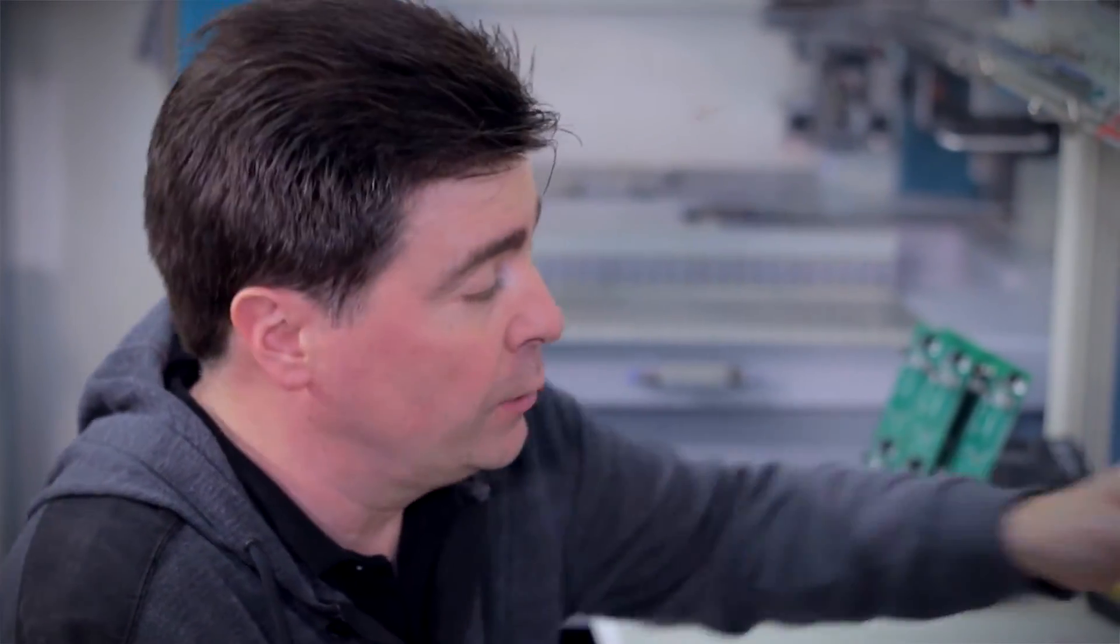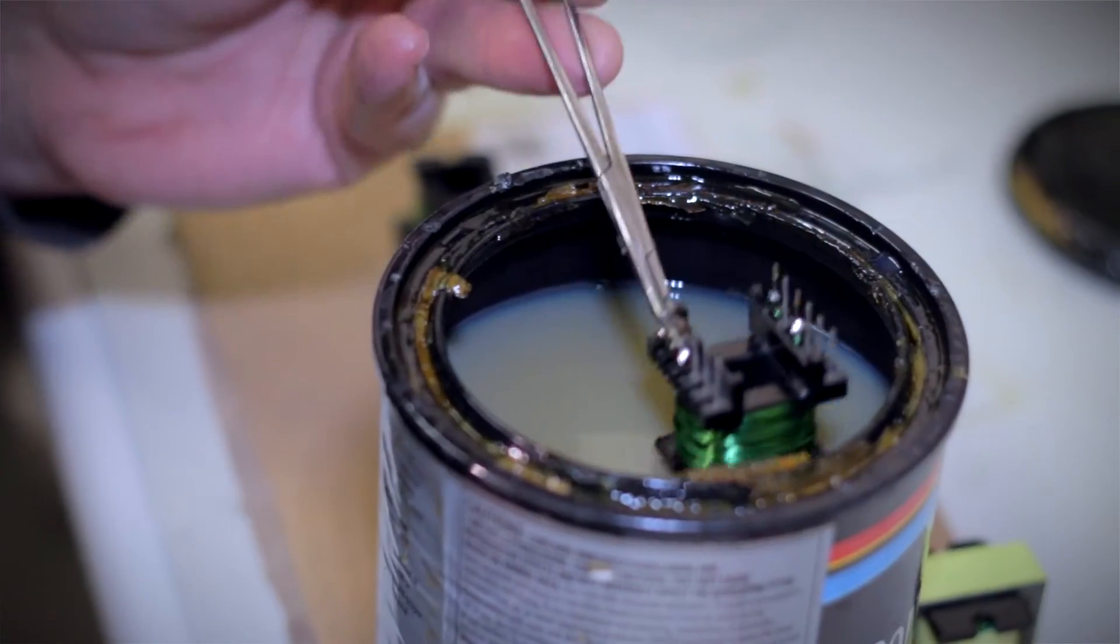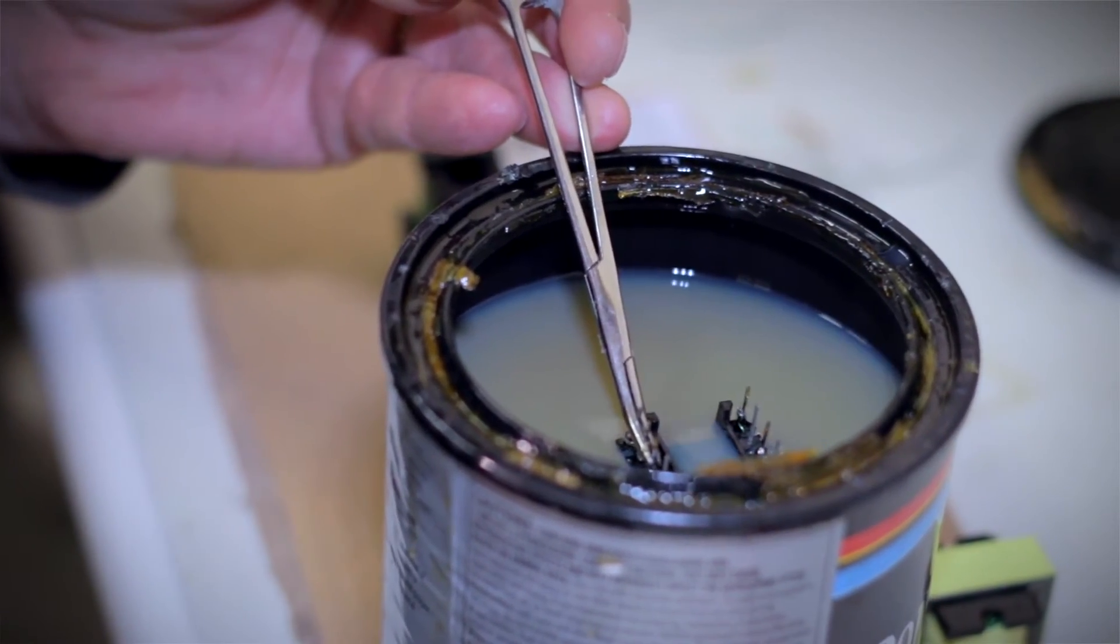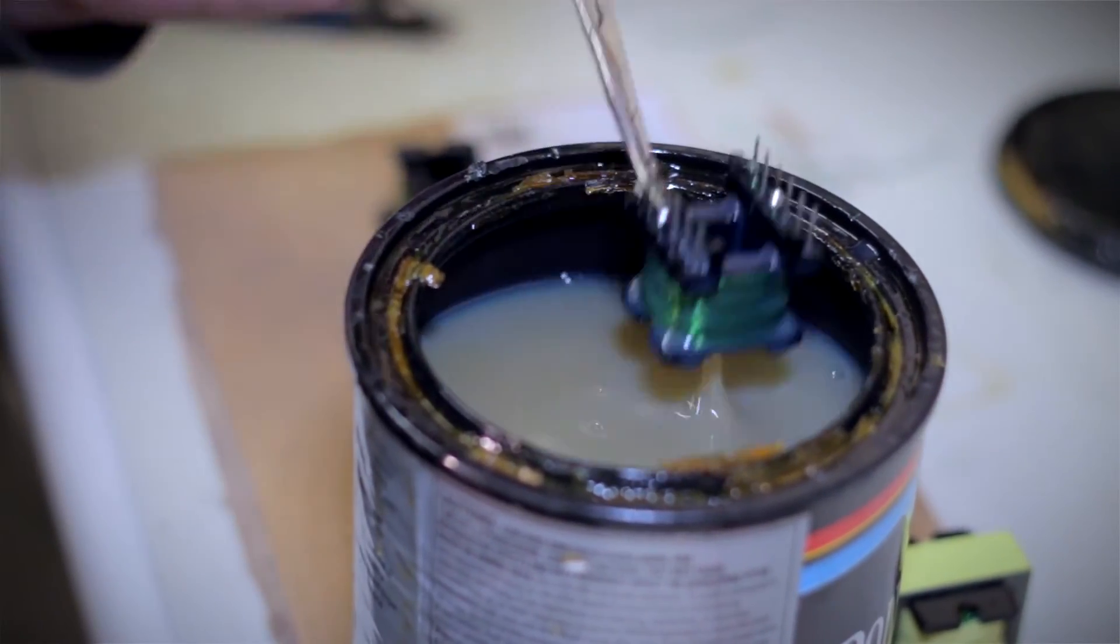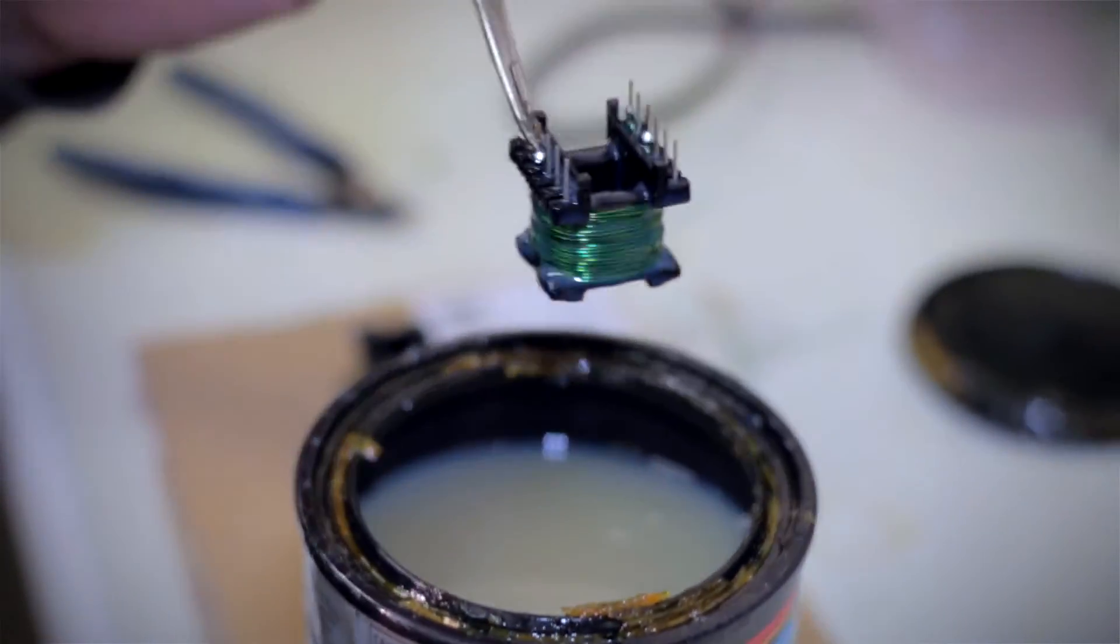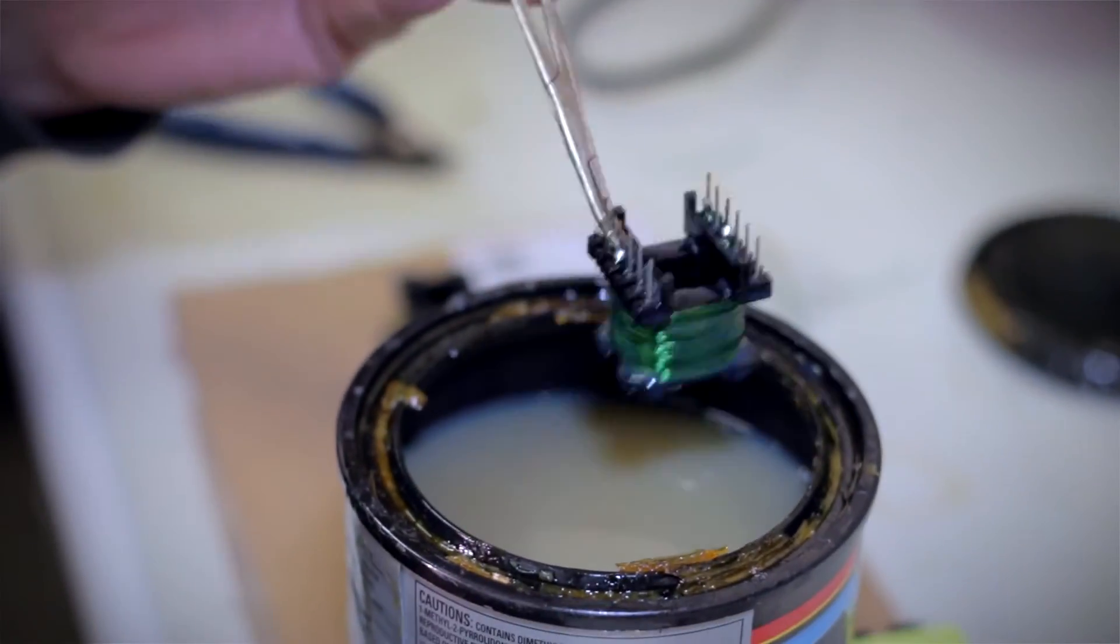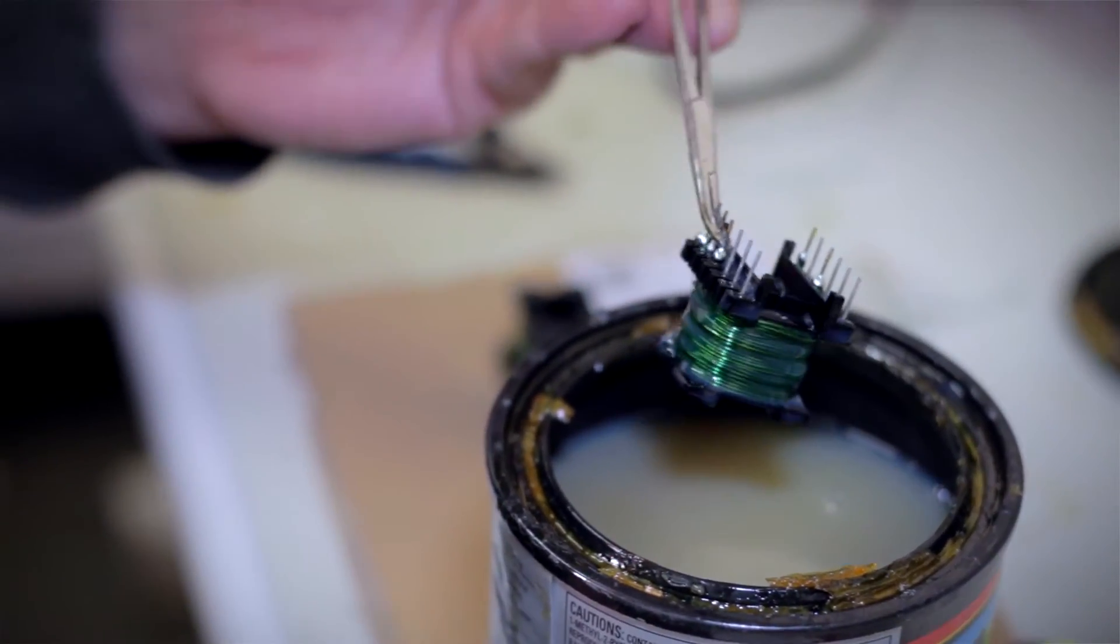The next step takes a little while to dry. What we're going to do is dip each transformer in varnish, just standard varnish available at your local home store. We do this to secure the transformer windings because, believe it or not, they do tend to vibrate when the signal goes through them. This helps reduce that.